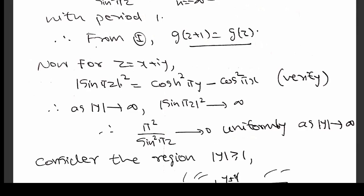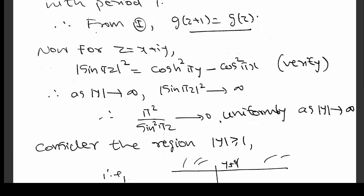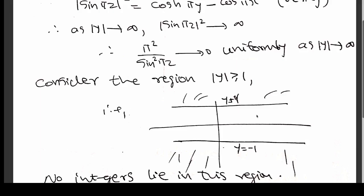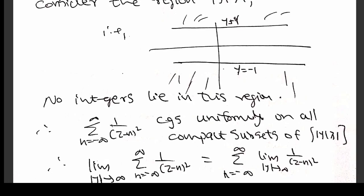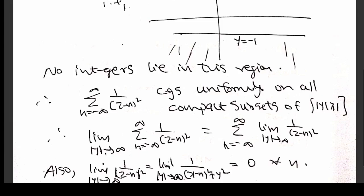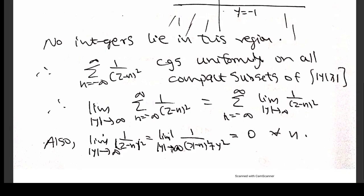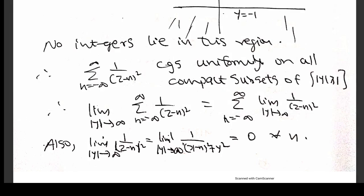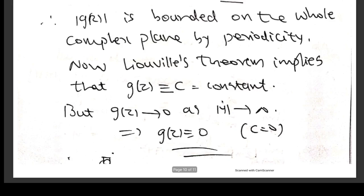Put z = x + iy; then you can easily prove that |sin(πz)|² goes to infinity as |Im(z)| tends to infinity. Therefore π²/sin²(πz) goes to 0 uniformly as |Im(y)| tends to infinity. Consider the region |Im(y)| ≥ 1 — excluding this strip — there are no integers there. The series converges uniformly on all compact subsets of this region. So if you apply the limit |Im(y)| → ∞ inside, you obtain 0 from the series term as well. Hence g(z) tends to 0 as |Im(y)| tends to infinity, since it is the difference of two things both going to 0.